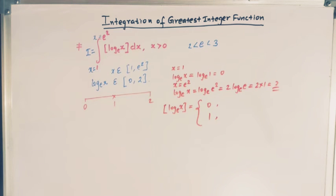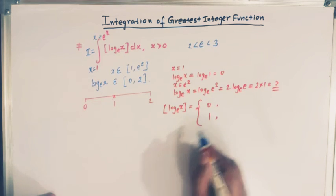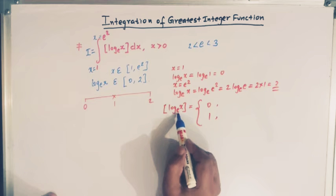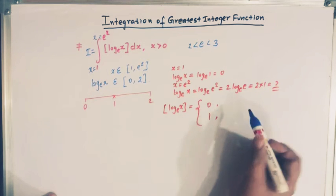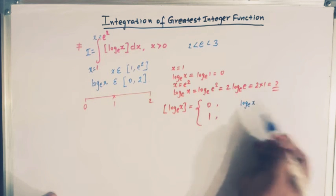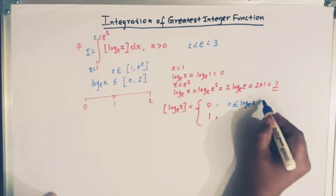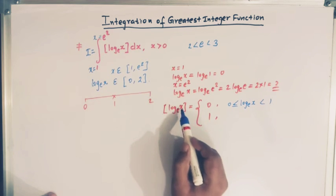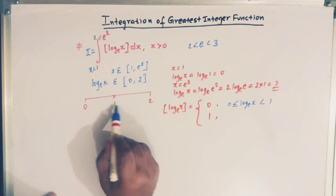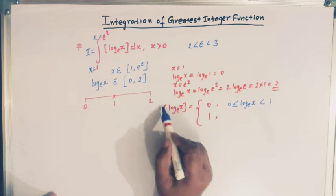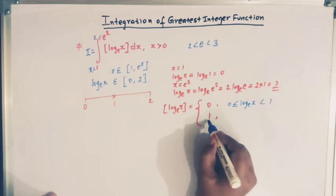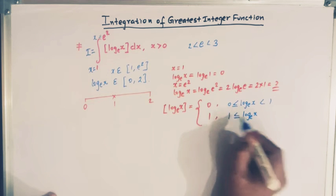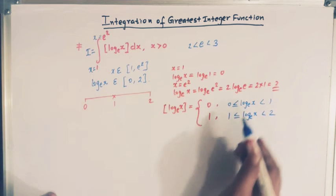We can write this in the form of inequalities. The greatest integer of log base e of x is 0 when log x lies between 0 and 1, and the value of the greatest integer of log x is 1 when log base e of x lies between 1 and 2.